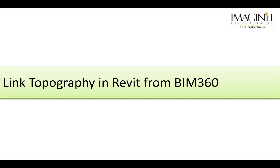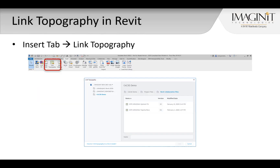The final step in the Civil 3D and Revit surface collaboration workflow is to create a linked toposurface inside of Revit. The link topography command is located on the insert tab of the ribbon and connects directly to the BIM 360 projects that I'm a member of. The compatible shared surface drawings are visible and can be selected for generating a toposurface.